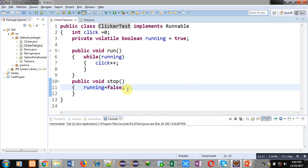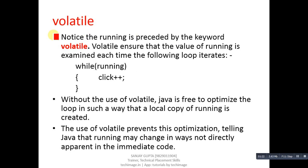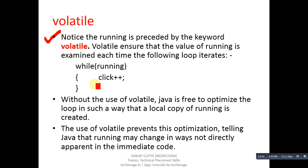This is a scenario where the volatile keyword is used with the running variable. Volatile ensures that the value of running is examined each time the while loop iterates. So the while loop checks the value of running — if it is true, click++ is performed, otherwise the loop will not repeat. With the use of volatile, the loop has to check running every time, whether it has changed or not.